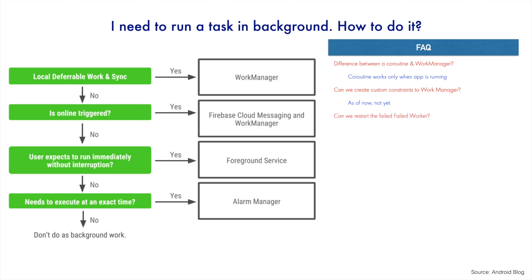Can we restart a failed worker? No, but you can use the retry methodology already available in the worker. The doWork method returns a result — it could be result.success or result.failure. There is a third option called result.retry, which tells the work manager to retry if something goes wrong. So you can use retry, but you cannot restart.